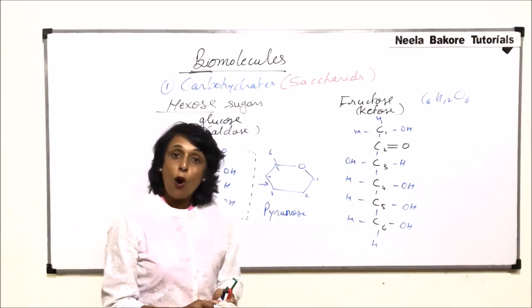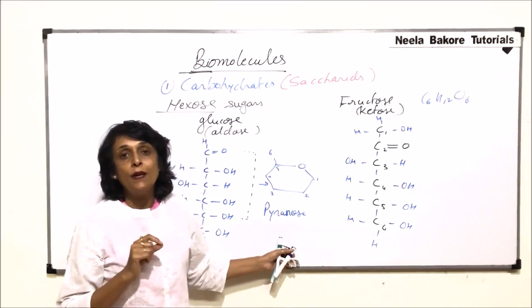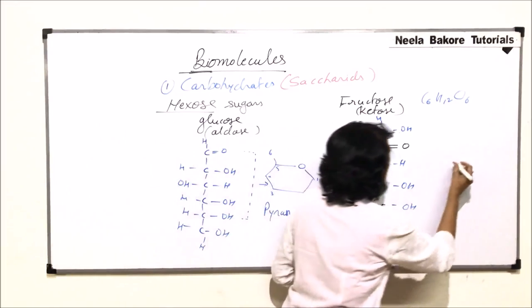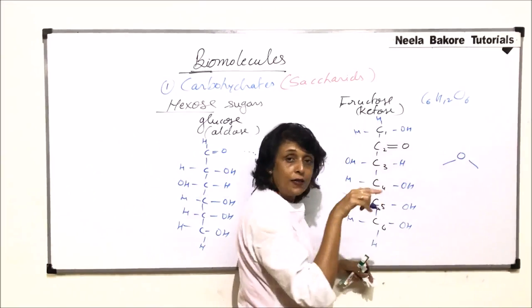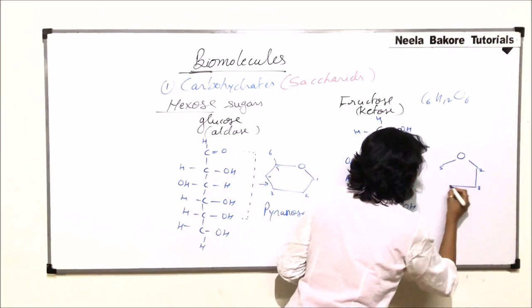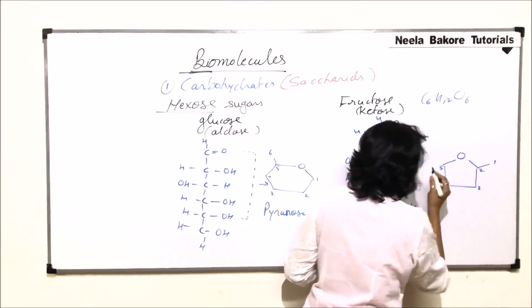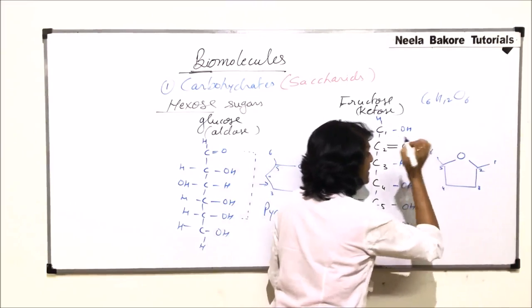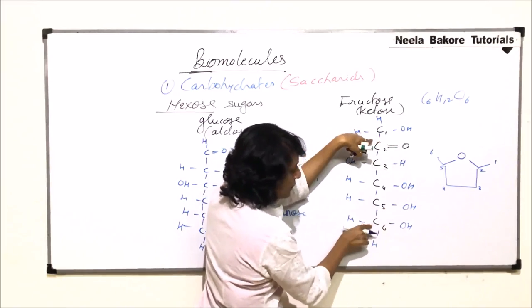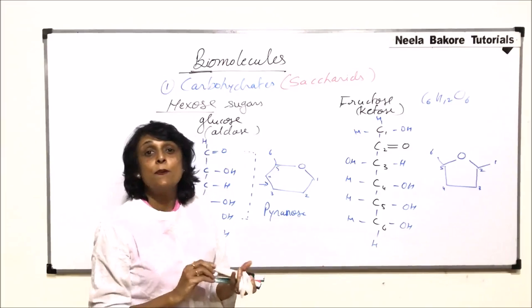Fructose can also exist as an open chain as well as a ring structure. In the ring form, the bond is formed between the second and the fifth carbon — oxygen is shared between carbon two and carbon five. Carbon three and four are in between, carbon one is attached to carbon two, and carbon six is attached to carbon five. When these two ends come closer to form the ring, a pentagonal ring results.